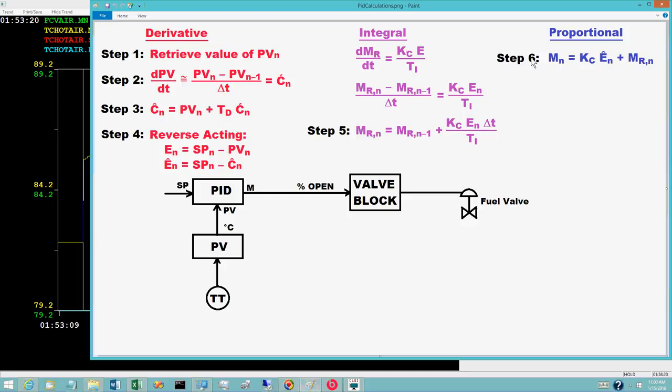Step six is to apply the proportional plus bias equation based on E sub n hat to compute a new value for M sub n for the controller output. Derivative mode calculations provide the value of the projected control error E hat sub n. The integral mode calculations provide the value of the controller output bias M sub r sub n. These are inserted into the proportional plus bias equation to compute the controller output M sub n.